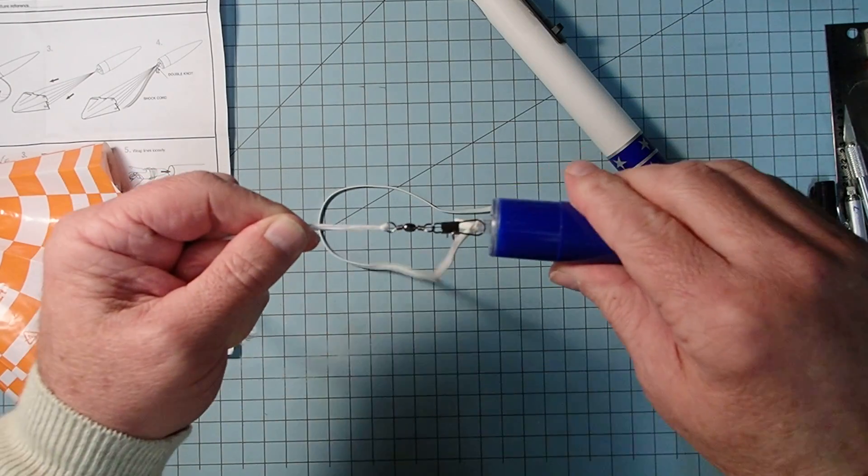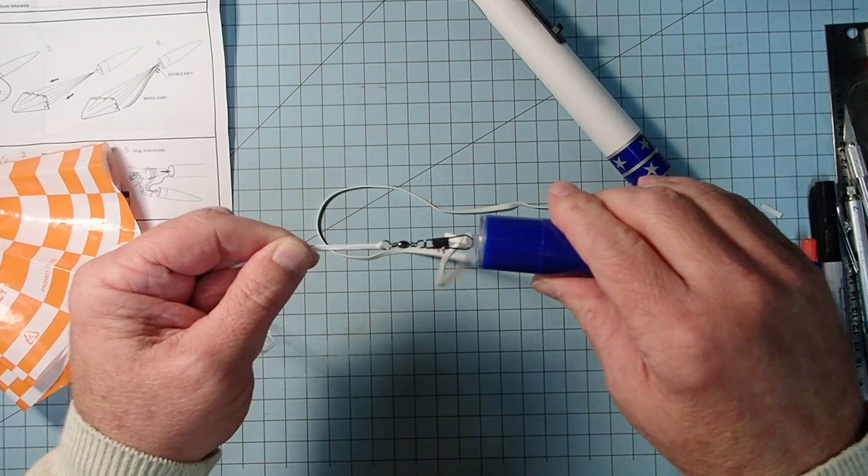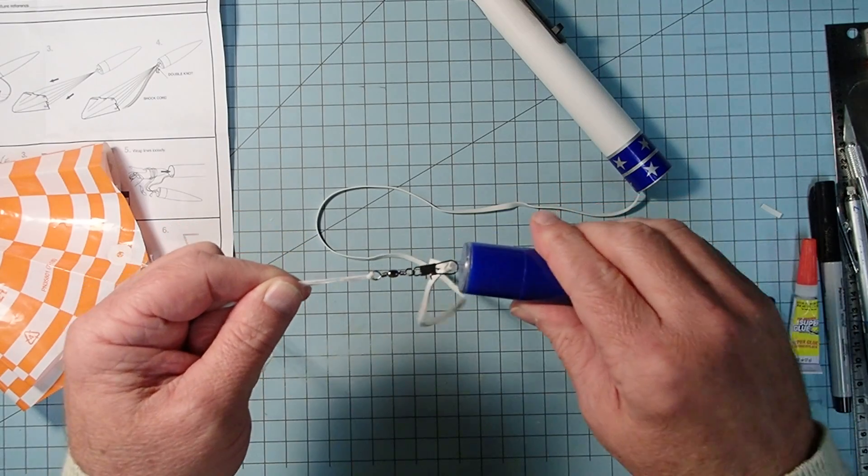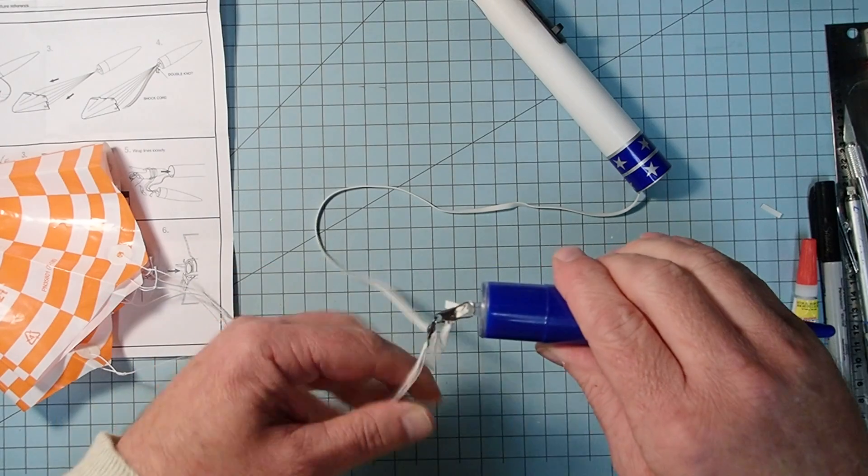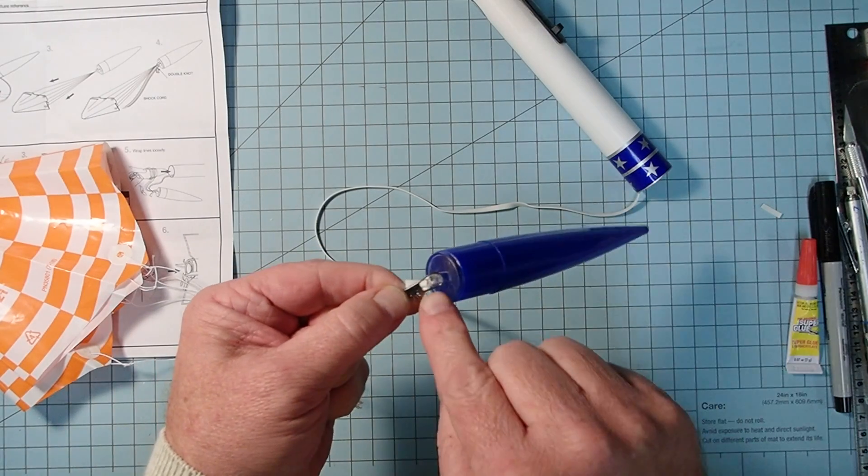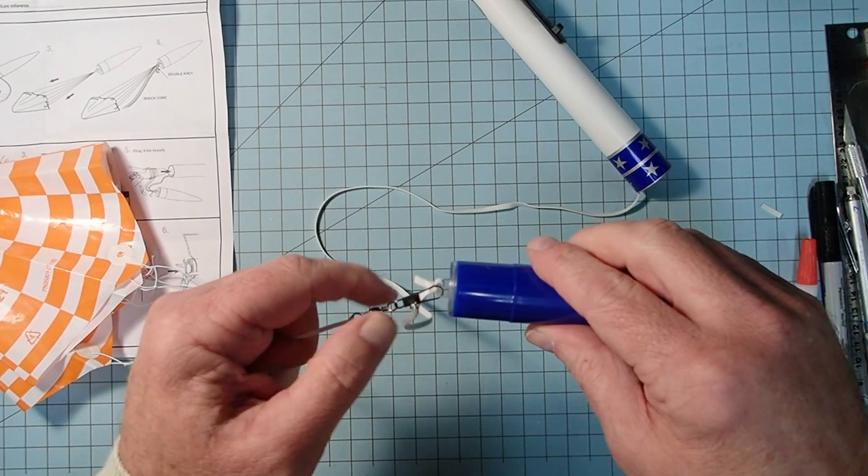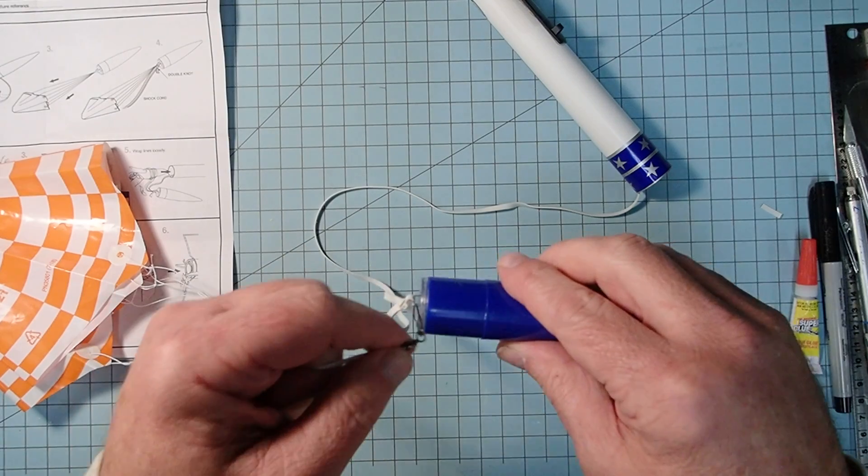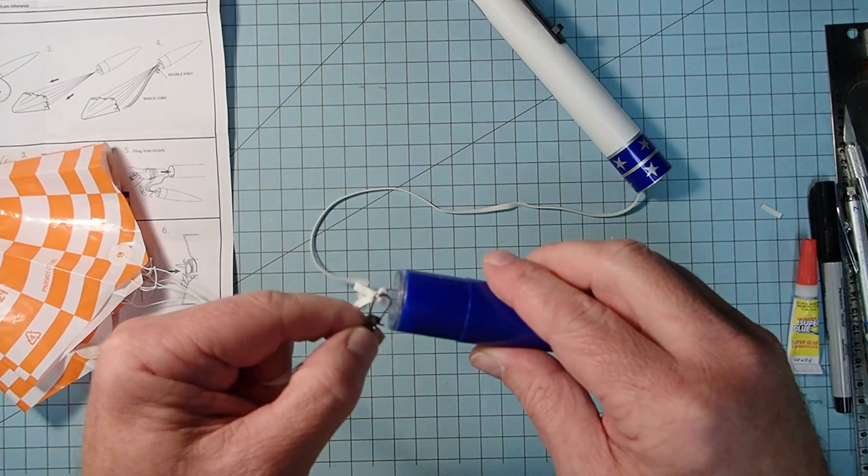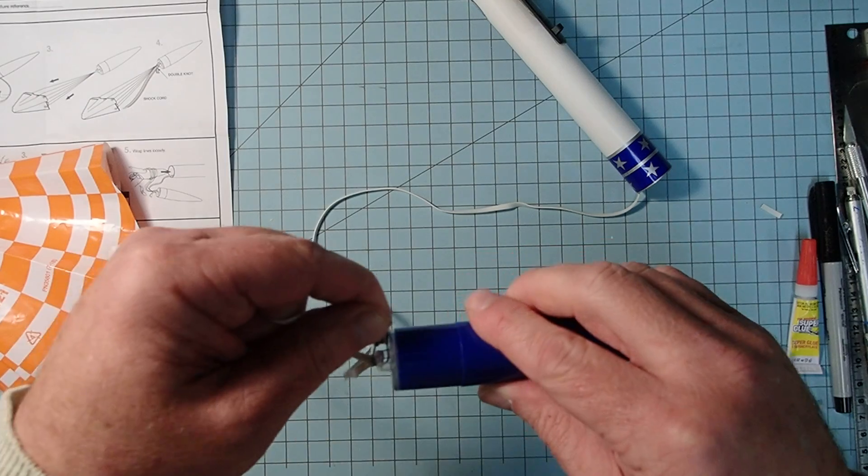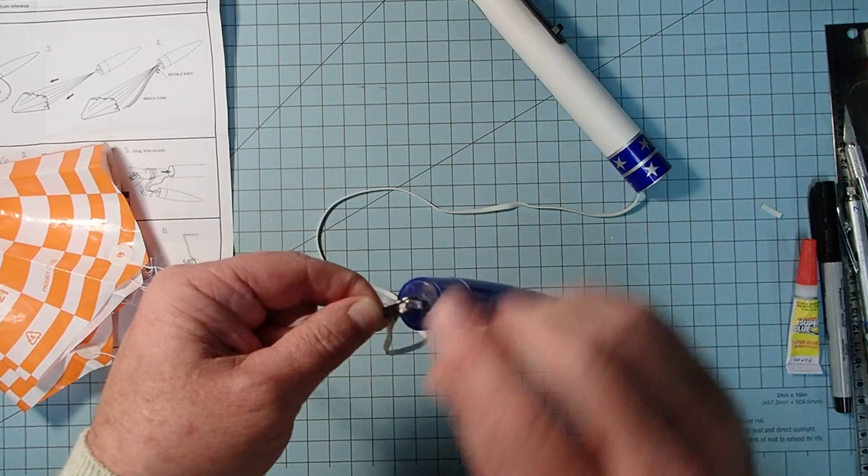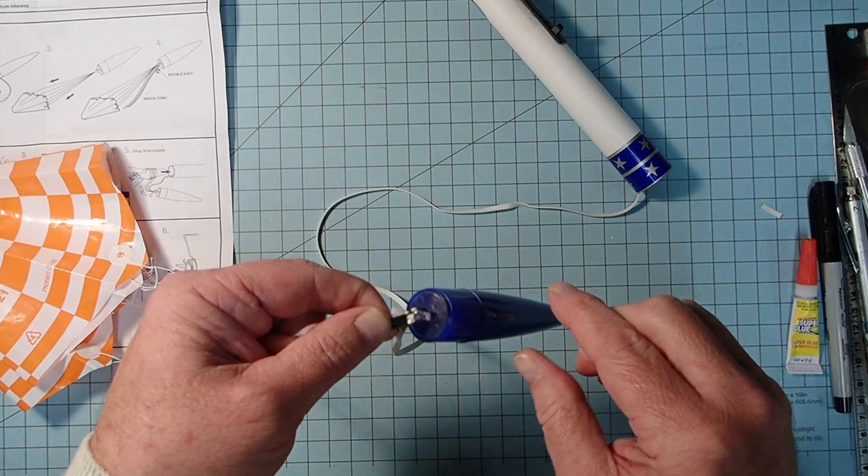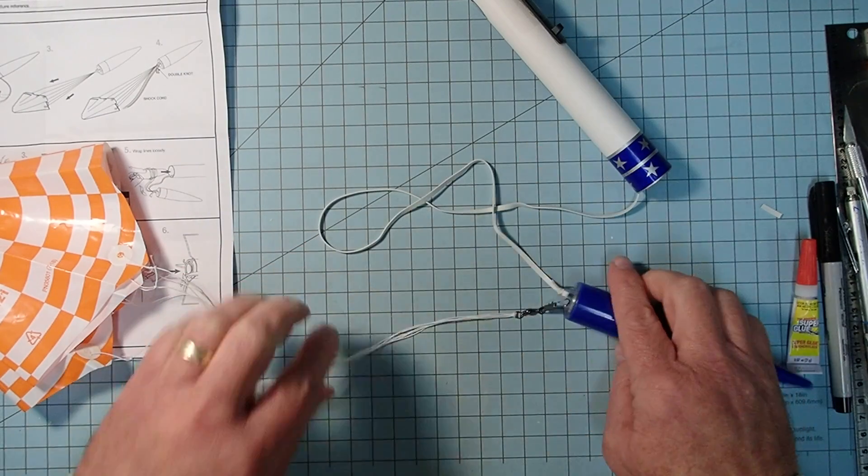Now, the overall size of the snap swivel doesn't make a lot of difference. Even the smallest one is more than robust enough to handle the weight of this rocket. What is more important is the size of the snap itself so that when it's in place, it should be able to freely move around that eyelet. If it sticks on one side or in the middle where it can't move across there, then you need one that's a little bit bigger.